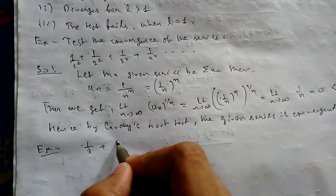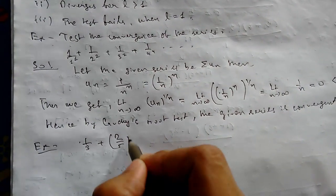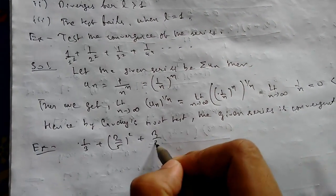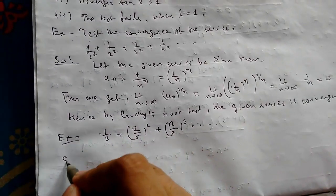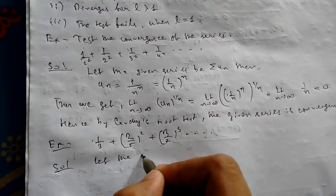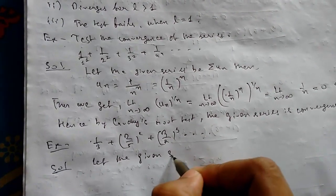Example: Suppose you have a series like 1 + (1/3) + (2/5)² + (3/7)³ + ... up to infinity. Solution: Let the given series be summation u_n.